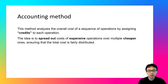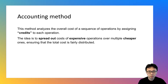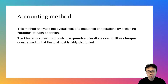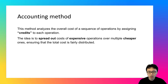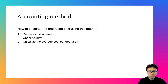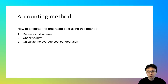So what's the accounting method? Same as other amortized analysis methods, the accounting method aims to provide a more accurate analysis of the cost of a sequence of operations. The idea is about assigning credits to each operation, spreading out costs of expensive operations over multiple cheaper ones. Three steps are involved: defining a cost scheme, checking validity, and calculating the average cost per operation.